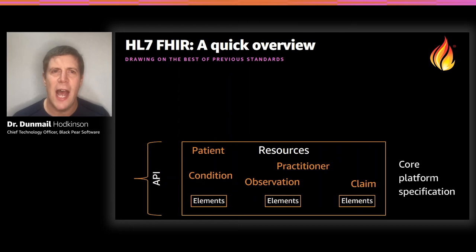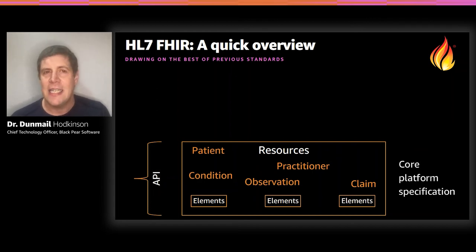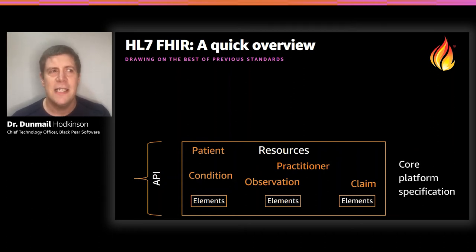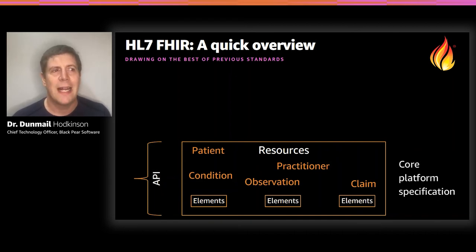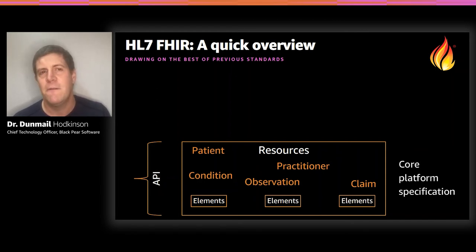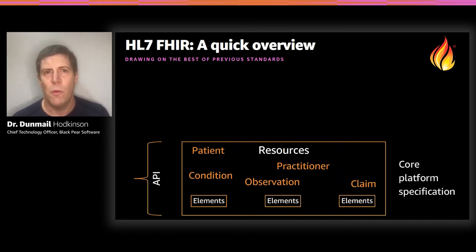Those resources are built on a common set of data types, including simple types such as IDs, strings, dates, and integers; complex types like addresses and human names; and most importantly, data types specific to the health domain. For example, there is a codable concept, which allows you to record a specific term from a clinical terminology — such as the SNOMED CT term for type 1 diabetes within a condition resource — to say that a patient has a particular condition.